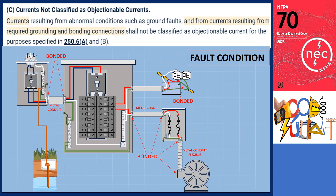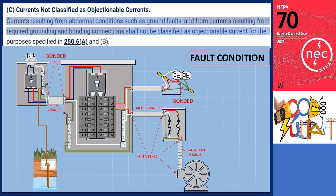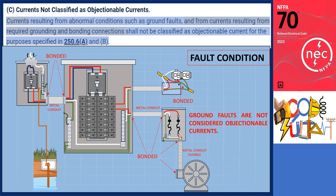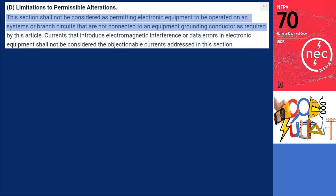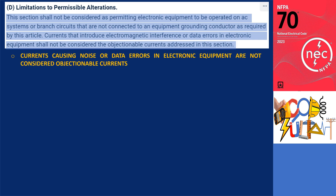Section 250.6C states that current resulting from abnormal conditions such as ground faults, and from current resulting from required grounding and bonding connections, shall not be classified as objectionable current for the purposes specified in 250.6A and B. The code clarifies that ground faults are not considered objectionable currents. Section 250.6D, limitations to permissible alterations: the provisions of this section shall not be considered as permitting electronic equipment to be operated on AC systems or branch circuits that are not connected to an equipment grounding conductor as required by this article. Currents that introduce noise or data errors in electronic equipment shall not be considered objectionable currents addressed in this section.